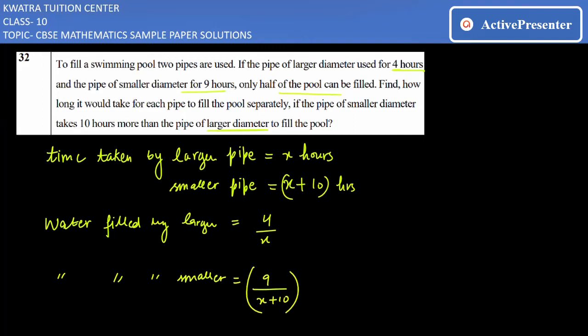Now this is only half of the pool that can be filled, so this information will be used. The larger one filled 4/x and the smaller one filled 9/(x + 10).